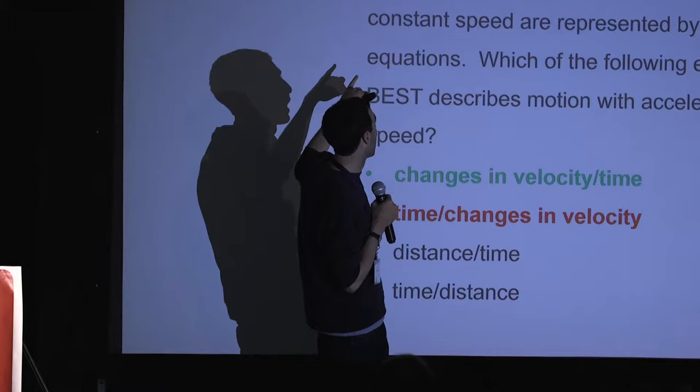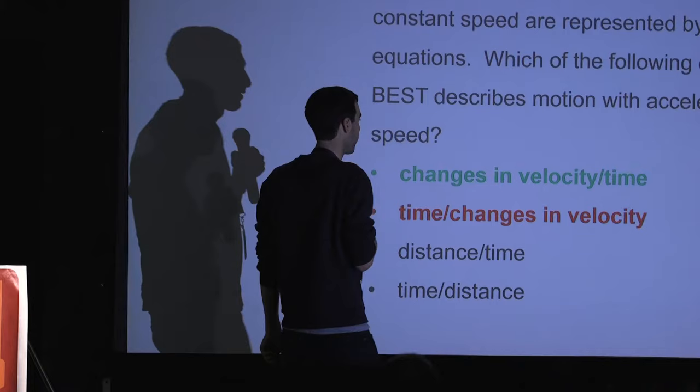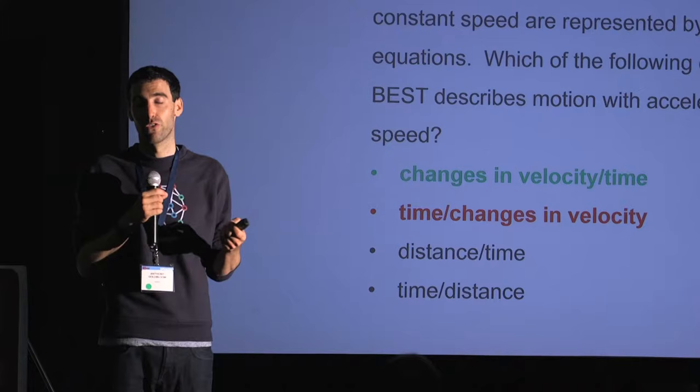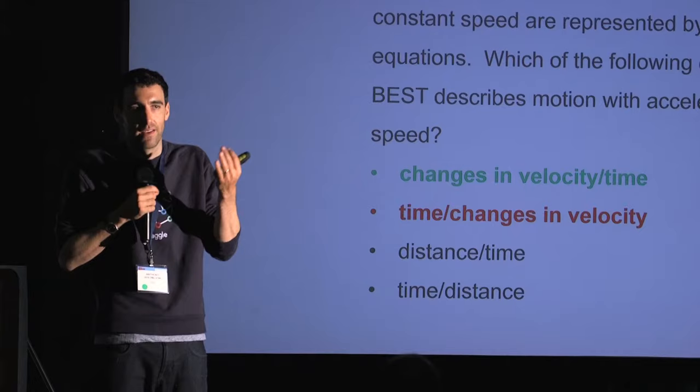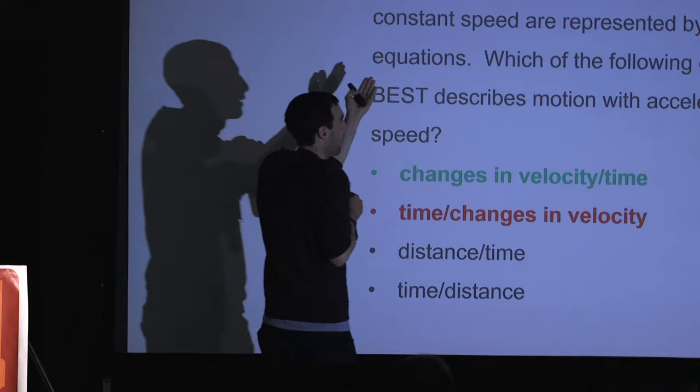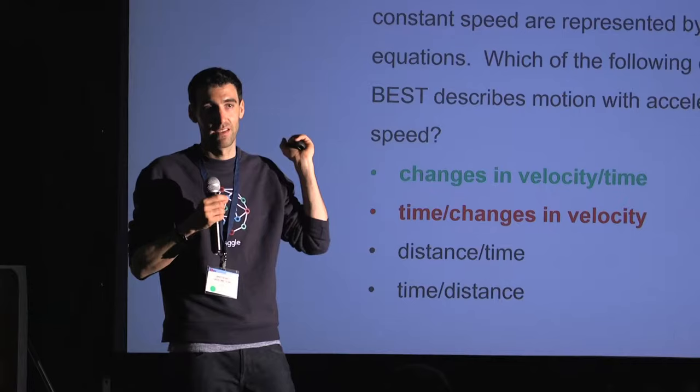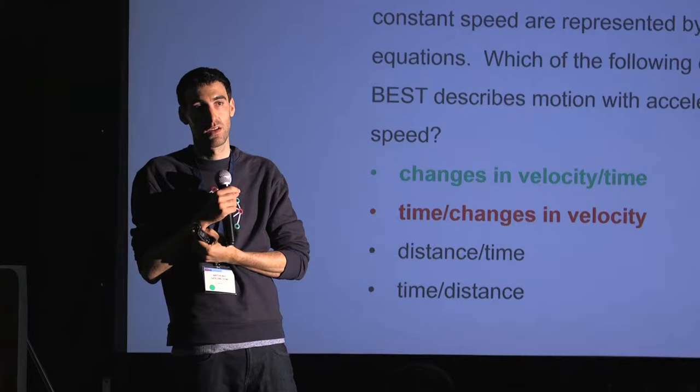For example: 'Which of the following best describes motion with accelerated speed?' Half the algorithms said 'changes in velocity over time' and the other half said 'time over changes in velocity.' The winning techniques used an information retrieval-based approach — basically looking for words that correlate with acceleration, changes in velocity, time. But the algorithms weren't smart enough to really understand the meaning — they were just word matching. You learn something about the limits of machine learning from what people get wrong.